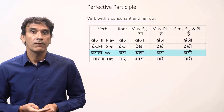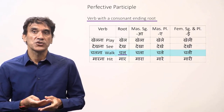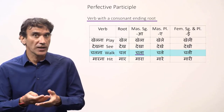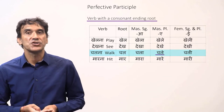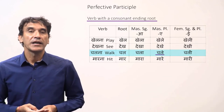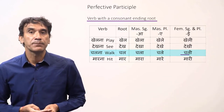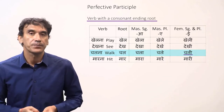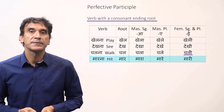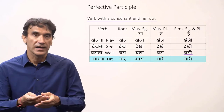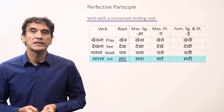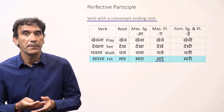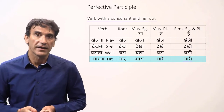For chalna, to walk, the root is chal. The masculine singular is chala, masculine plural is chale, and feminine singular and plural participles are chali. Similarly, for marna, to hit, mar is the root, and the participles are mara, mare, mari.